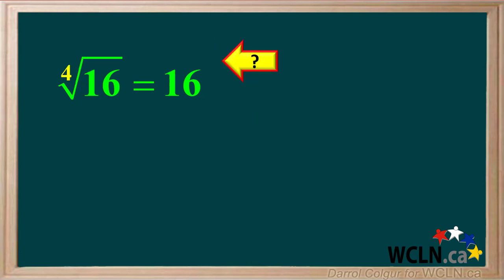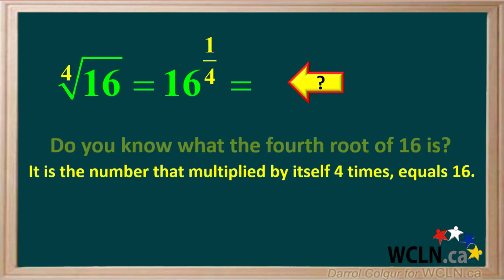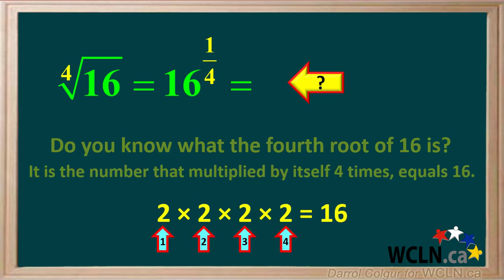Now the 4th root of 16 would be the same as 16 to what power? If you guessed 16 to the power 1 quarter, you're right. Do you remember what the 4th root of 16 is? It's the number that multiplied by itself 4 times equals 16. 2 multiplied by itself 4 times comes out to 16. So the 4th root of 16, or 16 to the power 1 quarter, is equal to 2.